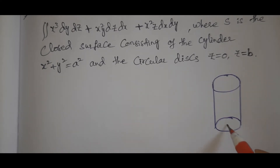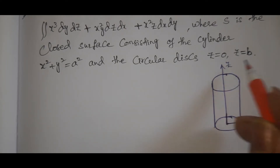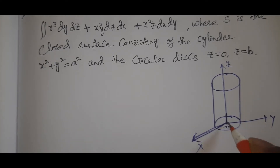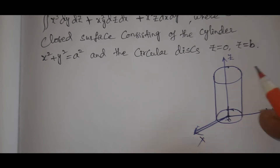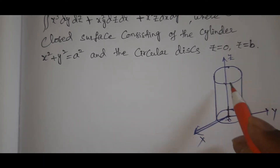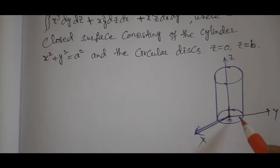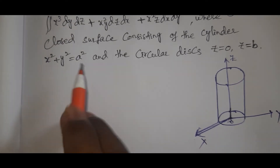Here we have the y-axis, z-axis, and x-axis with the origin point. This is the circular disk and the cylinder. The point b is marked, and the radius of the cylinder is x = a.